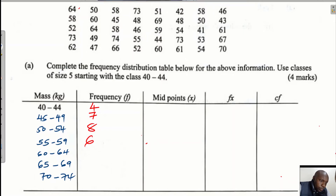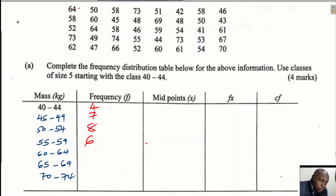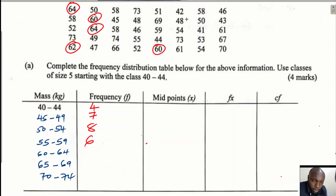The next class is 60 to 64. I can see one value there, another one down there, and more values falling between 60 and 64. As long as the value is between 60 and 64, it falls in this class. Counting: one, two, three, four, five, six, seven — there are seven values.